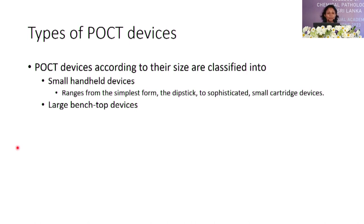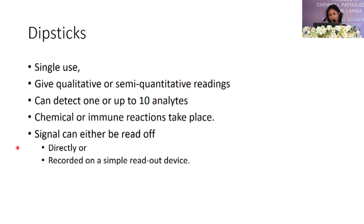POCT devices can be divided according to their size into two parts: small handheld devices, ranging from simple dipsticks to sophisticated small cartridge devices, and large bench-top devices. Dipsticks are designed for single use and give qualitative or semi-quantitative results. We can detect from one up to ten analytes depending on the dipstick selected, involving chemical or immune reactions. The single signal can be read visually or recorded on a sample readout device.